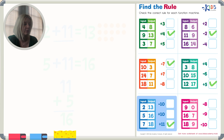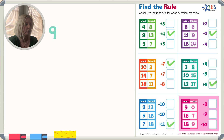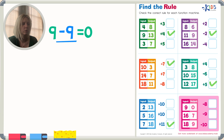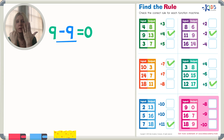We've got one more function machine — you're doing an awesome job! We've got 9, and we have to do something to get zero. There's a rule with zero: if we end with zero, we have to take away that exact number. So we've got 9, and I think it's going to be minus 9. Nine minus nine equals zero. On my fingers: take away 9 — 1, 2, 3, 4, 5, 6, 7, 8, 9 — and I'm left with zero. So this is the right answer.